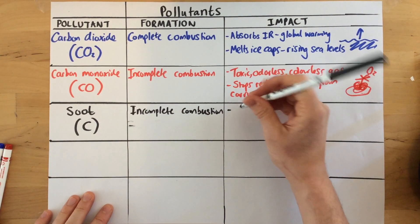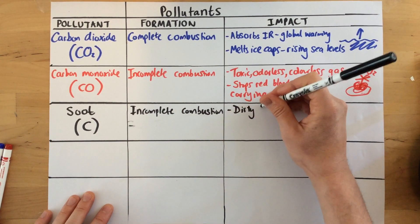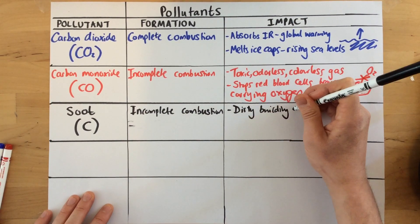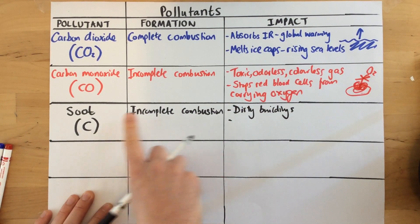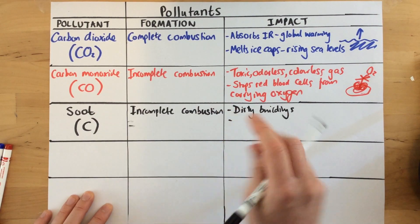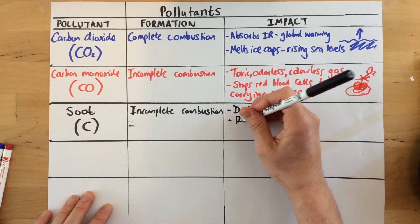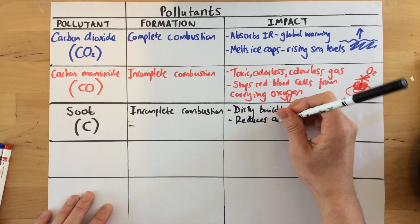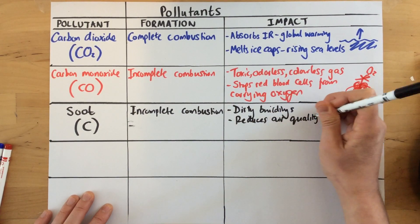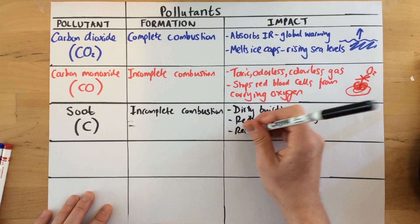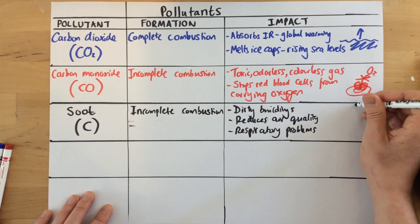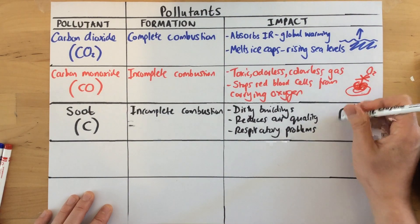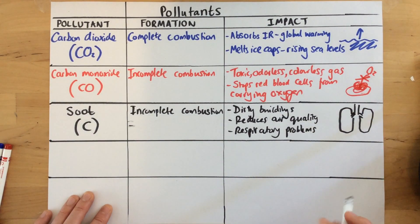Soot can make buildings dirty. If you've ever seen buildings right next to a really busy road in a big city, they're often quite blackened — that's from all the soot due to incomplete combustion and carbon coming from car exhausts. It basically reduces air quality and can also cause respiratory problems.